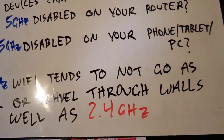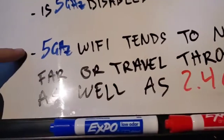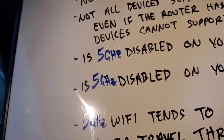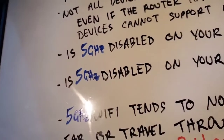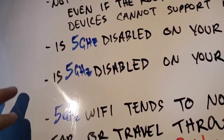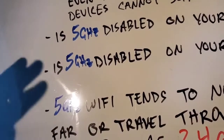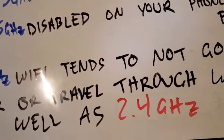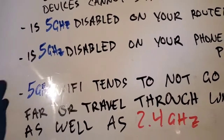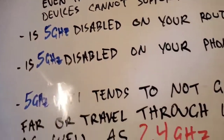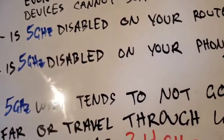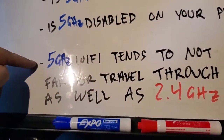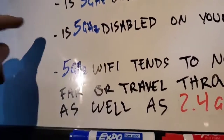5 gigahertz Wi-Fi tends to not travel as far or go through walls as well as 2.4 gigahertz. If you're far from the router or going through several walls, you might be able to see your 2.4 gigahertz network but not your 5 gigahertz network. The 5 gigahertz signal doesn't penetrate objects as well as 2.4 gigahertz, and in open space it also may not reach as far as the 2.4 gigahertz network.